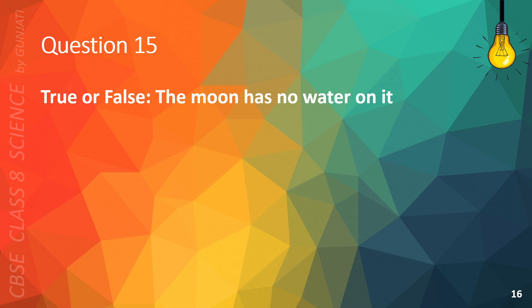Question 15. True or false? The Moon has no water on it. The correct answer is A. True.